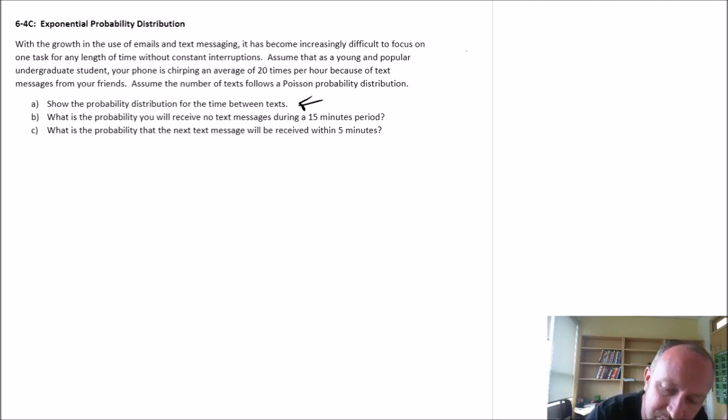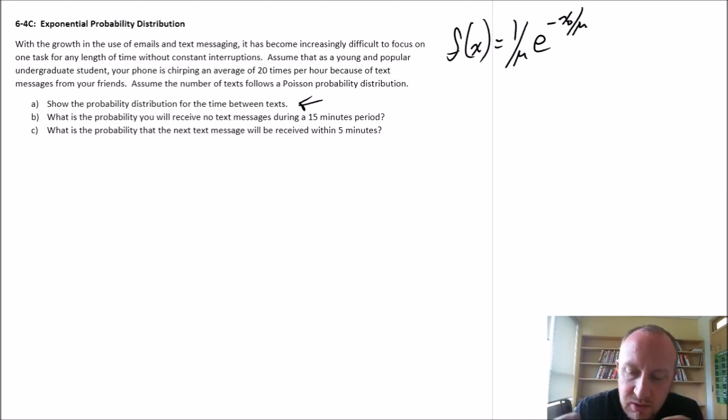Well, the probability distribution for the exponential function—here we're looking at the density function—is equal to 1 over mu times e to the negative x over mu. So we've got that on your formula sheet or you've memorized it. How do we translate this information that follows a Poisson distribution so that we can use the exponential probability distribution?